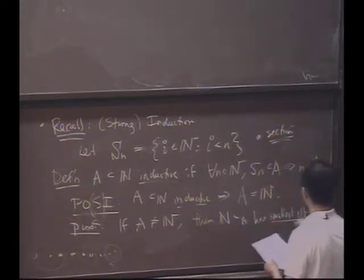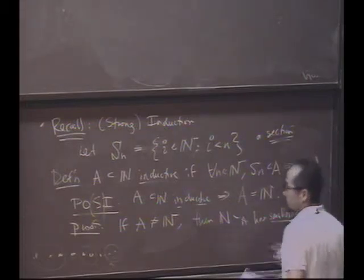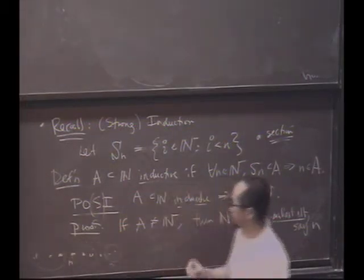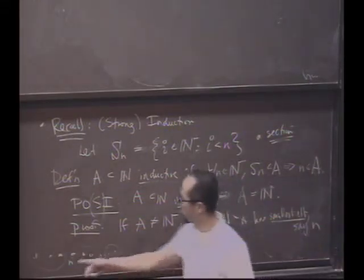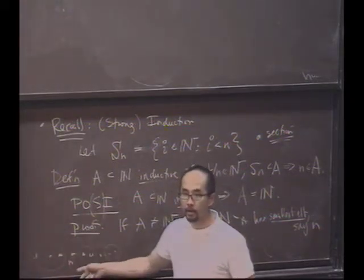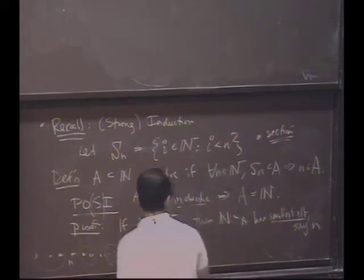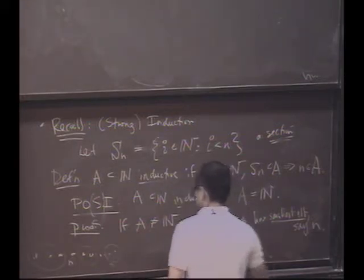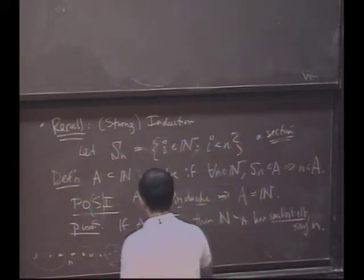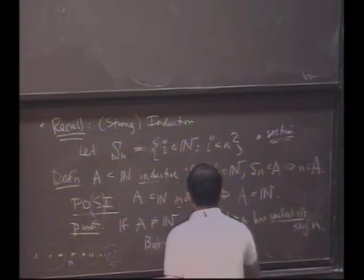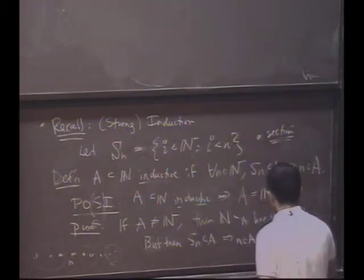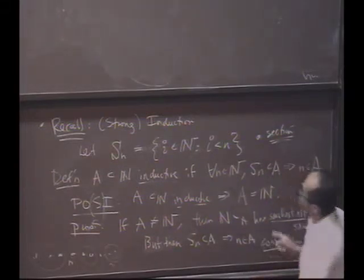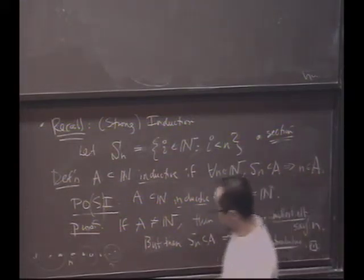And it might say it has the smallest element. Let's call it n. So what's the contradiction? Little n. Yes, Emil? Oh, but everything before it is in A. Therefore, n is in A. Contradiction, right? But then, S_n is in A, which implies that n is in A. Contradiction. Okay, great. That's the principle of strong induction.